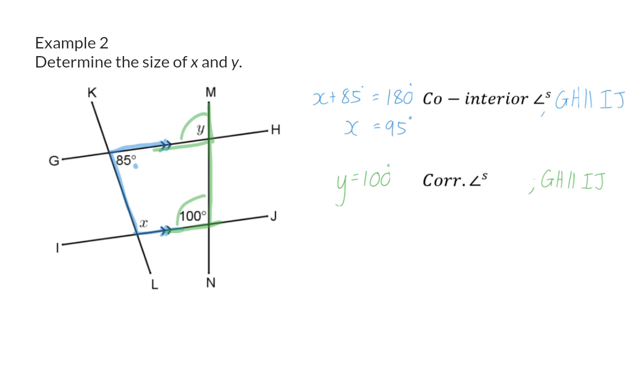It is very important to realize that corresponding, alternate, and co-interior angles will be visible in the same sketch. You will have to decide which of them will help you to determine your unknown angles. In the next video, we're going to have a look at examples that combine all the properties and theorems that we've done up to date.